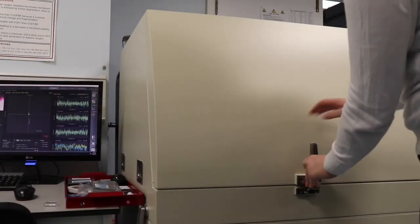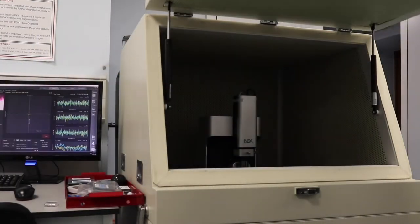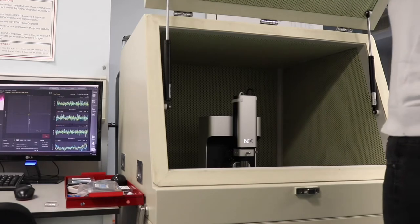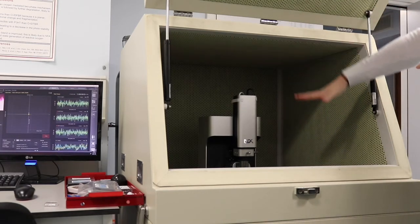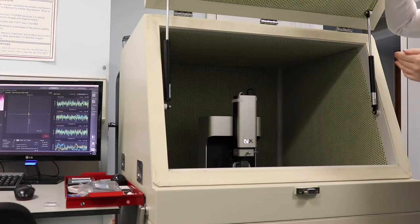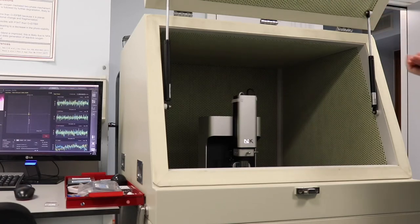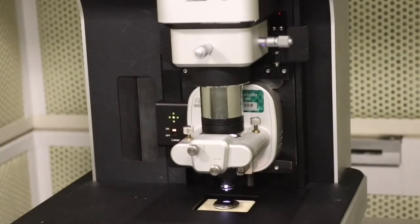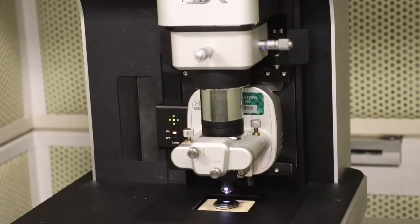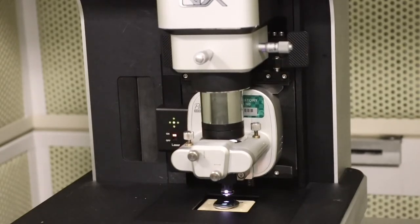This is the AFM which is atomic force microscopy. We use this to measure the topography of our samples. The sample is put in here and we lower down a very fine tip onto the surface of the sample. This measures the surface giving us really beautiful images of topography which can really help us understand the morphology of our samples.